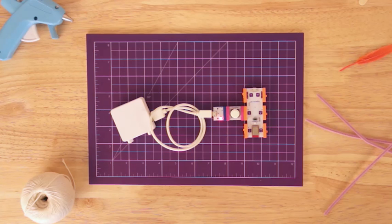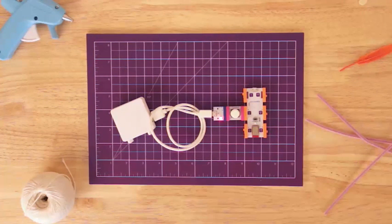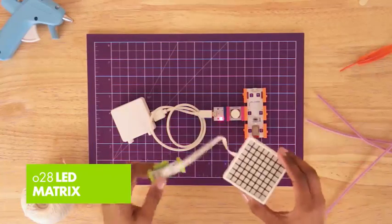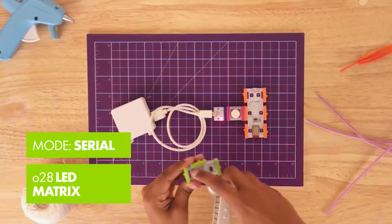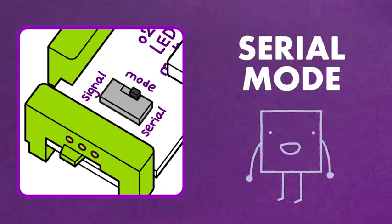Now let's grab a new output bit, the LED matrix. The LED matrix needs to be in something called Serial mode. So make sure that the little switch on the board is set to Serial. This mode is what lets the matrix read special signals from the code bit that tells it how to show images, animations, words, and numbers.